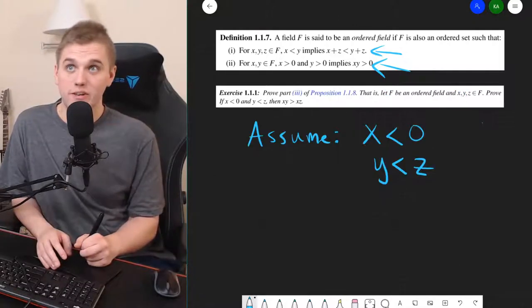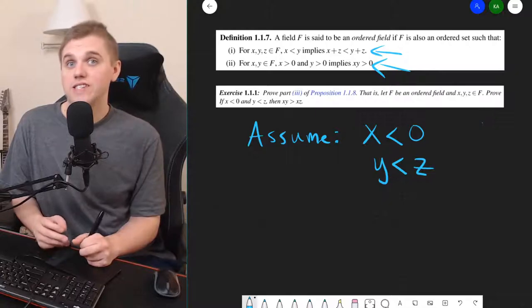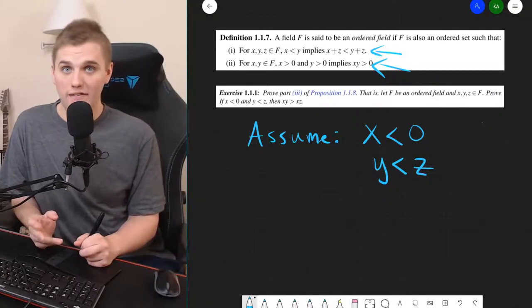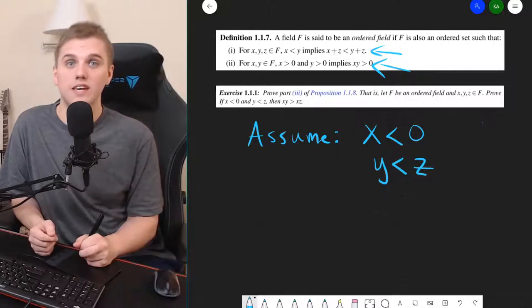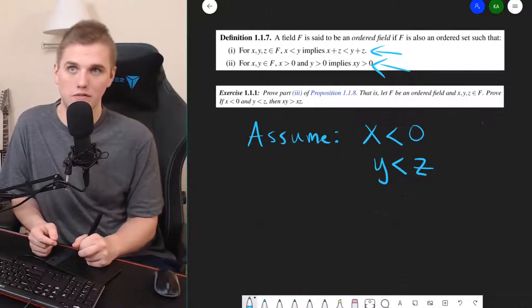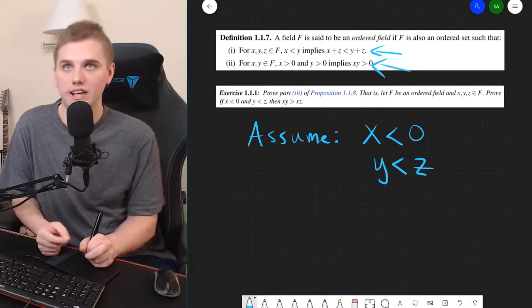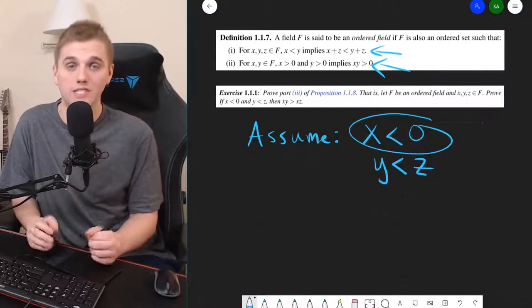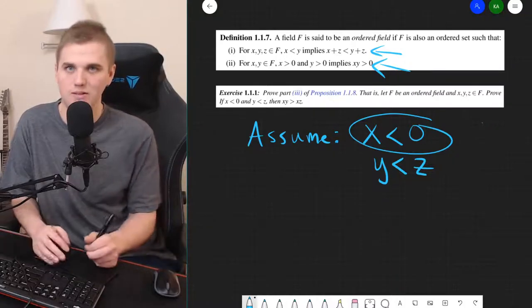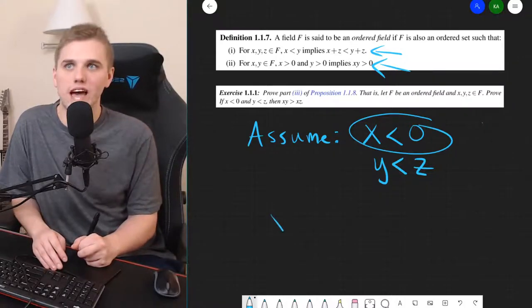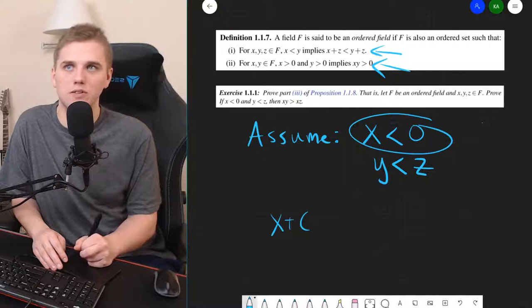I'm going to start with x is less than zero. Now, since x is a member of this field f, then since f is a field, that means negative x is also in the field. So, I can add negative x to both sides of this inequality since negative x is also in f. f is a field. So, let's add negative x to both sides.